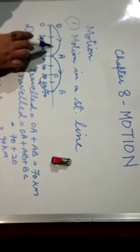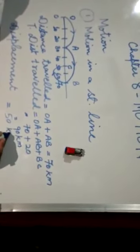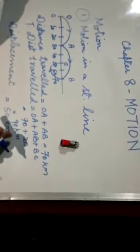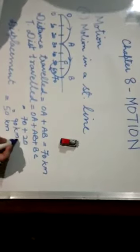So, if you count, 0 to 10, 20, 30, 40 and 50, the displacement here will be equal to only 50 kilometers, whereas the distance traveled is 90 kilometers.